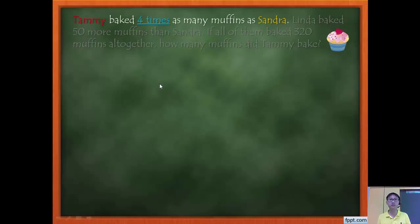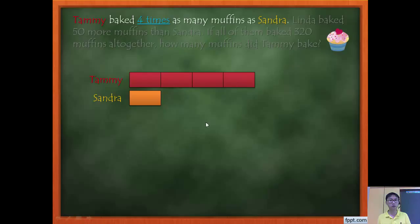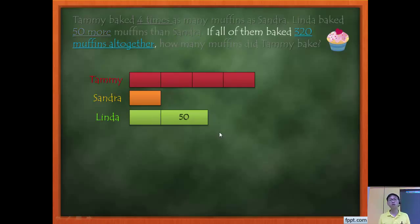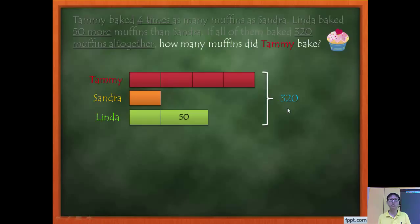Let's draw the model line by line. Tammy baked four times as many as Sandra, so Tammy has four boxes and Sandra has one box — all equal. Next, Linda baked 50 more muffins than Sandra, so Linda has the same amount as Sandra plus 50 more. If all of them baked 320, everything here adds up to 320. And we are looking for the number of muffins that Tammy baked.